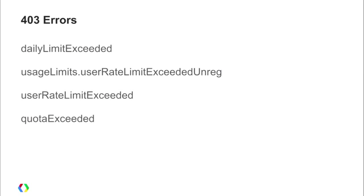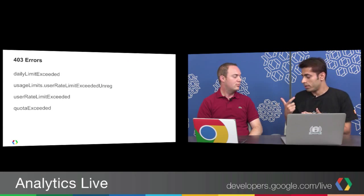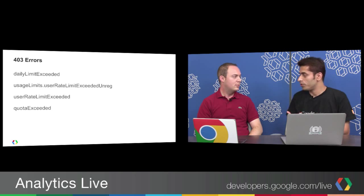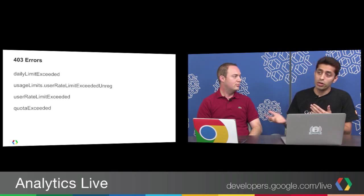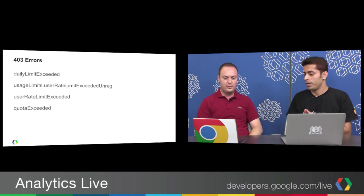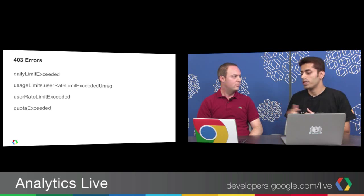Whereas with daily quota errors, you just have to stop making requests. The 'unreg' error is about registration — it means either you haven't registered and are sending unregistered traffic, so you need to go sign up in the APIs console, or you have registered but your auth setup is incorrect and you're not propagating the project ID in your request. You need to set up OAuth 2, which we strongly recommend.